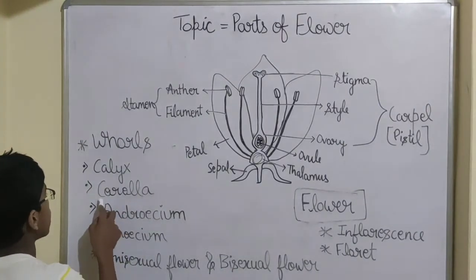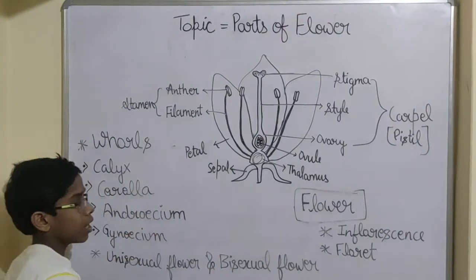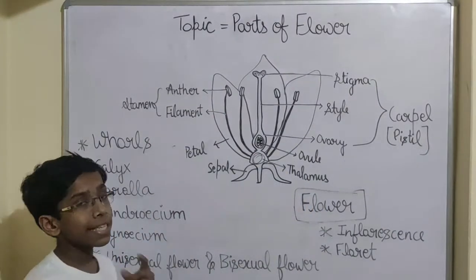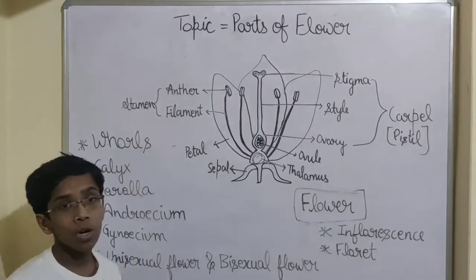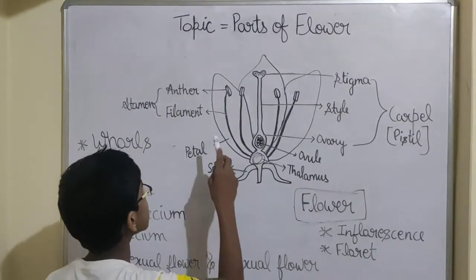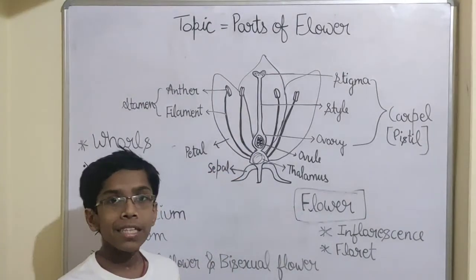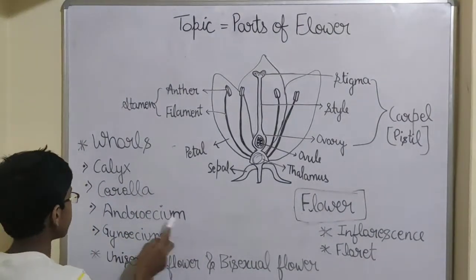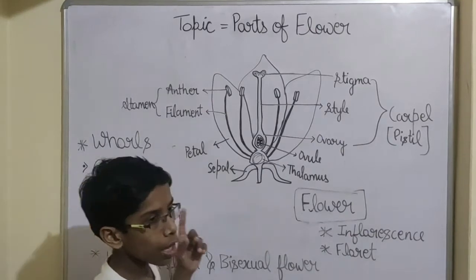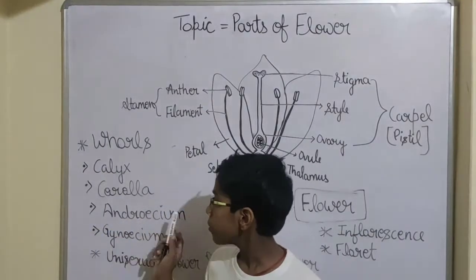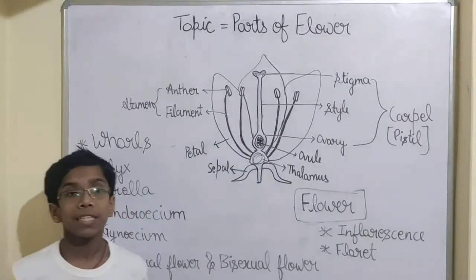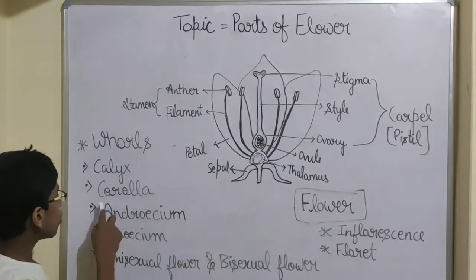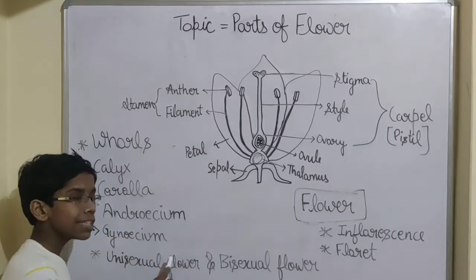Our next whorl is corolla. It is the second whorl and it consists of petals. Petals protect the reproductive whorls — androecium and gynoecium. When the flower is in the bud stage, corolla protects androecium and gynoecium, which are the reproductive parts.